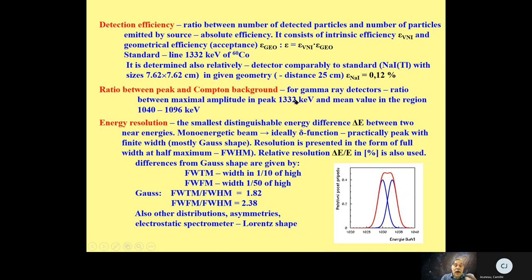For energy measurements and determination of line energies, it is important to know the energy resolution of the detector. This is the smallest distinguishable energy difference between two nearby energies. If you have a monoenergetic beam, ideally it would be a delta function, but practically in any detector you obtain a finite width — mostly a Gaussian shape. Resolution is presented in the form of full width at half maximum (FWHM).